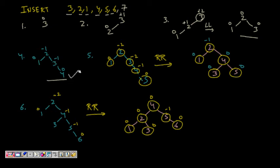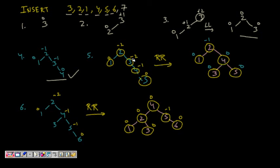Insert 4 — balance factors are all within magnitude 1, so this is fine. Insert 5 — going up from 5, node 4 gets balance factor -1, and node 3 gets -2, violating AVL. Node 3 is gamma, and 5 was inserted in the right subtree of the right child of 3 — RR rotation. Node 4 becomes the root of that subtree, 3 goes to its left, 5 remains to its right, and 4 connects back to 2 and 1.